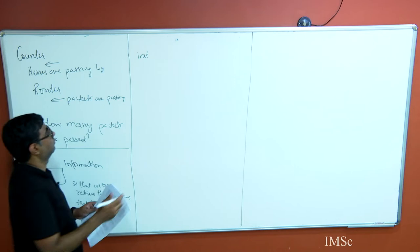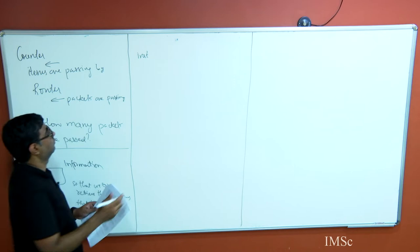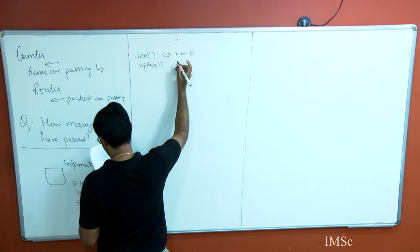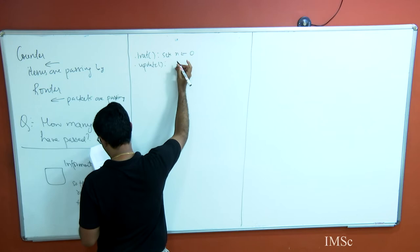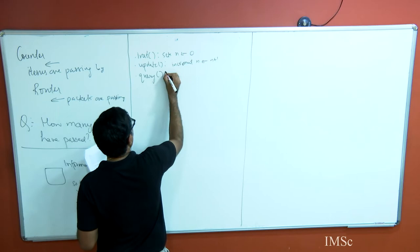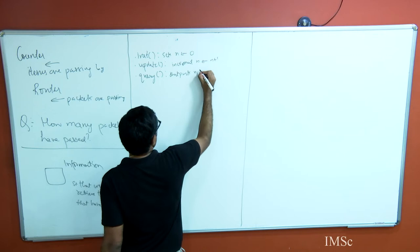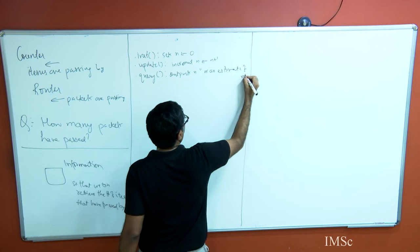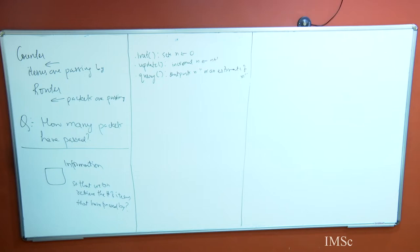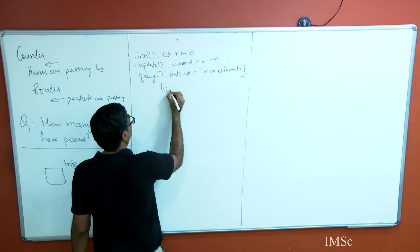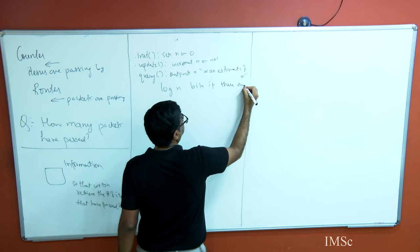So we initialize: we set some number n to 0, and whenever an item comes you update this — increment n to n plus 1 — and when a query comes, the query outputs n, or an estimate of n as we will see. How much space will this take? This algorithm takes log n bits if there are n items.